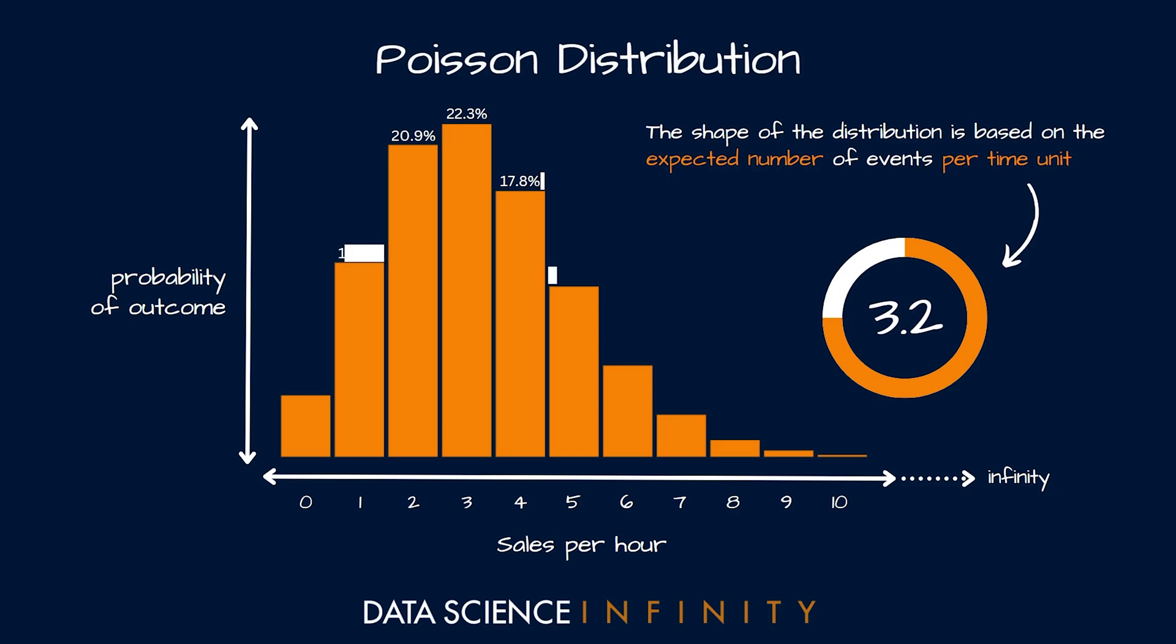So reading from the left, this suggests that with an expected number of sales per hour of 3.2, there is a 4.1% chance of getting zero sales in a given hour period, a 13% chance of getting one sale, a 20.9% chance of two sales, and so on. These are also additive, so we could equally say that the likelihood of there being two or fewer sales in an hour is 38%, the sum of those three bars. In the same way we could say there is a likelihood of only 10.5% that we will see six or more sales in that period.